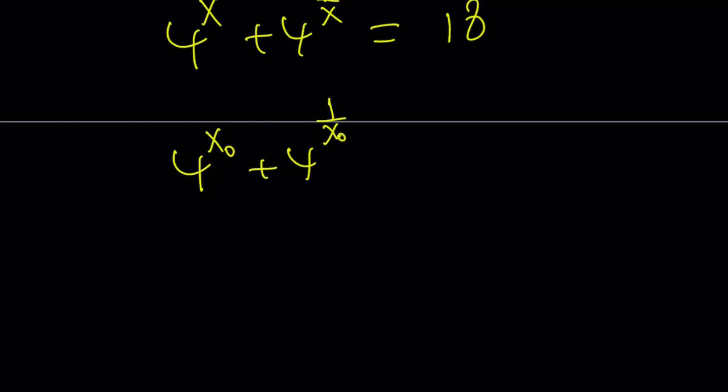this is just going to be 4^(1/x₀) + 4^(1/(1/x₀)), which is the reciprocal of the reciprocal, which is x₀. So, it's going to be the same thing. They're going to be equal.